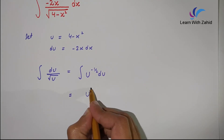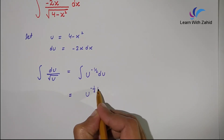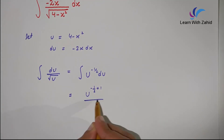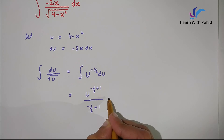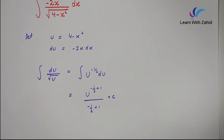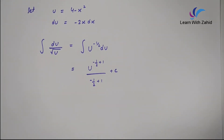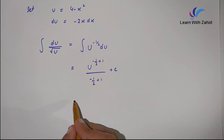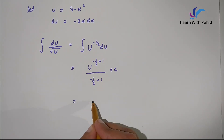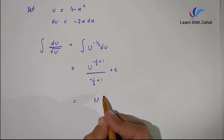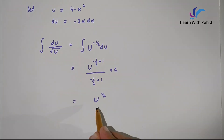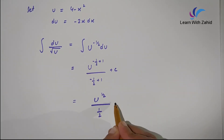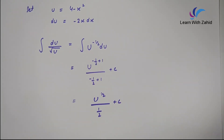The integration of this function is u raised to the power (minus 1 by 2 plus 1) over (minus 1 by 2 plus 1), plus c. By simplifying, u raised to the power (minus 1 by 2 plus 1) is plus 1 by 2, divided by 1 by 2, plus c.